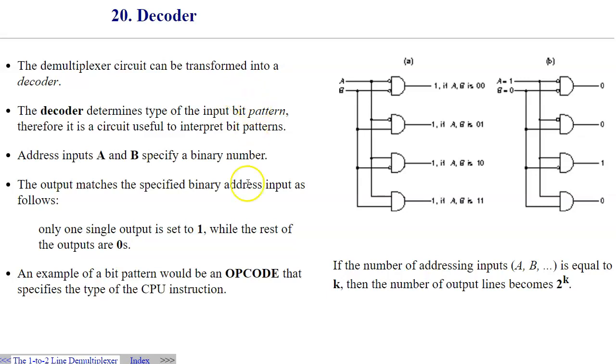So basically to demonstrate this function, we can have two inputs A and B, which could be 00, 01, 10, and 11. These combinations will indicate that, for instance, if the input is 00, this output will be set to 1 and the rest of them will be 0.